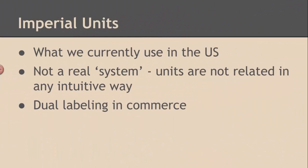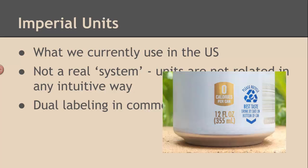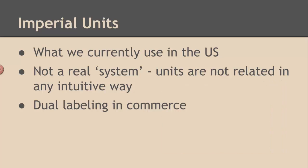In commerce, when you go buy something, the best we can do nowadays is dual labeling. So you can find sometimes the metric equivalent on a packaging as well as the imperial units on there. 12 ounces, a 12 ounce can is 355 milliliters of soda. That sort of thing.